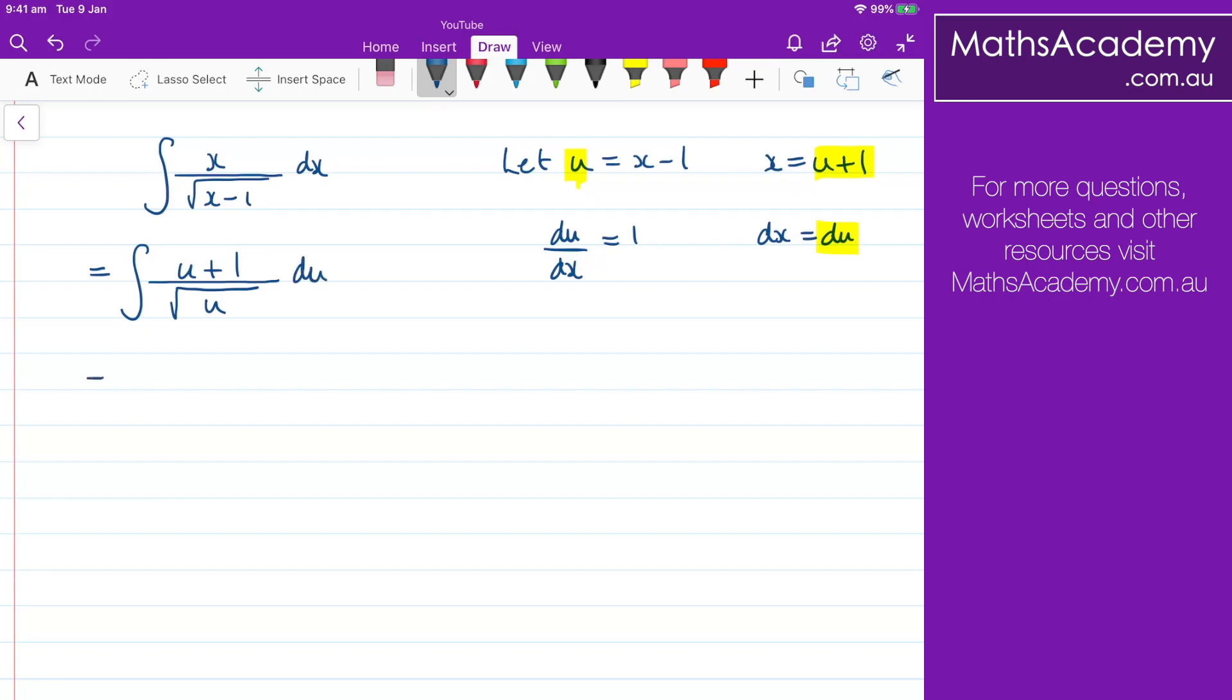Now, I can rearrange this a little bit. We've still got the integral of u plus 1. The square root of u is u to the power of 1 half. And because it's in the denominator, when I bring it to the numerator, it would be u to the negative 1 half. And that's with respect to u.